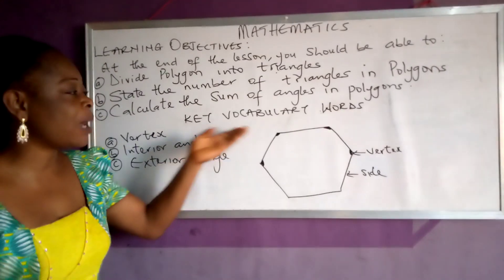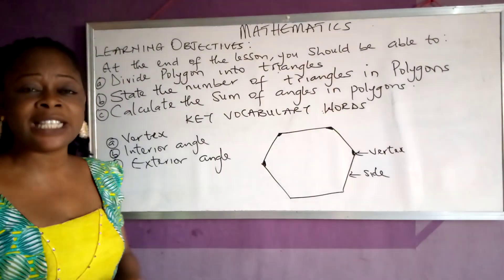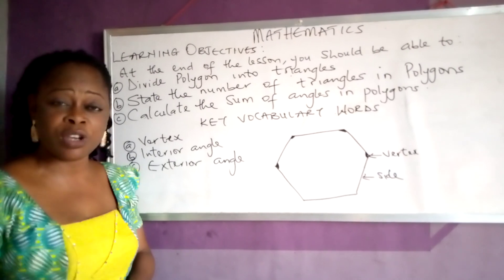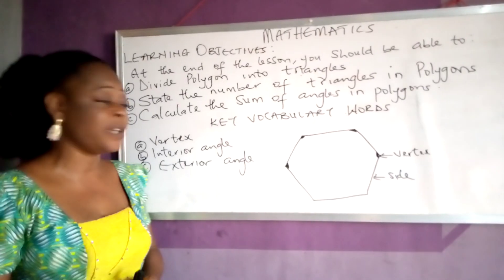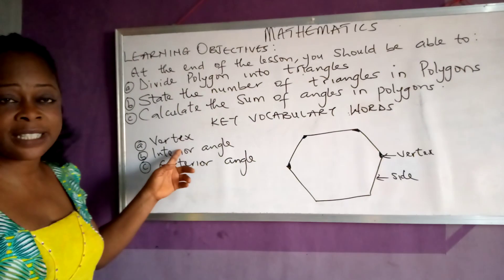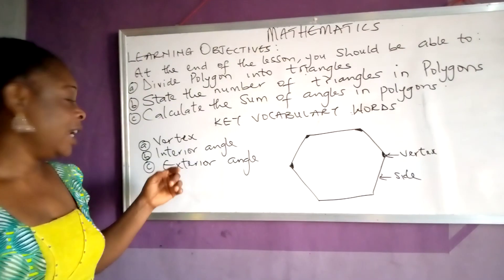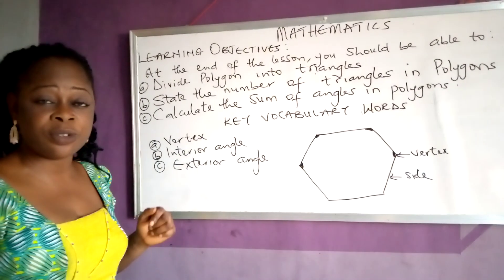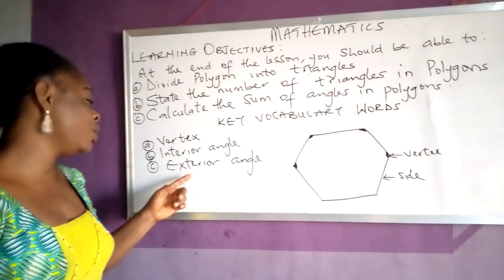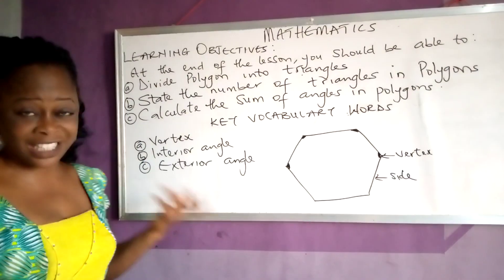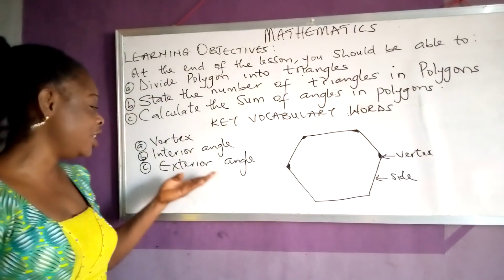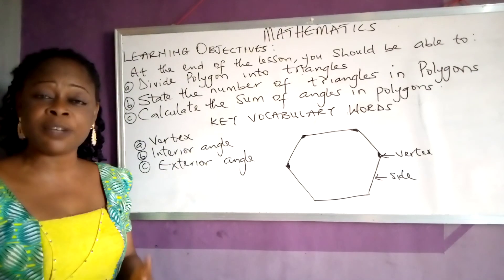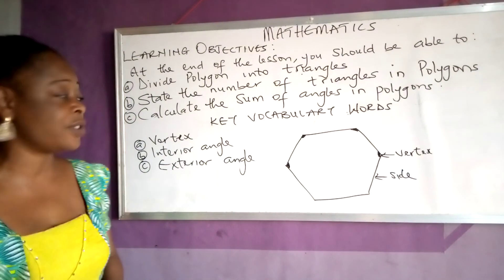Now, the key vocabulary words — that is, the words you need to understand before we go into this topic. The first one is the vertex, the second one is interior angles, and the third one is exterior angles. We don't need exterior angles much, but we do need interior angles because we are dealing with interior angles.